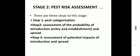Stage two, pest risk assessment, has three steps. Step one: pest categorization. Step two: assessment of the probability of introduction — that means entry, establishment, and spread of the pest are determined, including when the pest will come, how it will get established, and how it will spread. Step three: assessment of the potential impacts of introduction and spread — the severity of introduction and spread of that particular pest are determined.